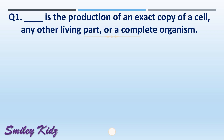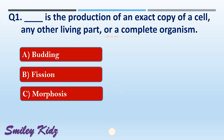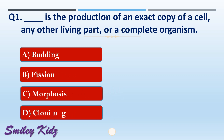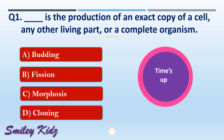Question number one: dash is the production of an exact copy of a cell, any other living part, or a complete organism. The options are: A) budding, B) fission, C) morphosis, or D) cloning. The right answer is option D, cloning. Cloning is the production of an exact copy of a cell, any other living part, or a complete organism.